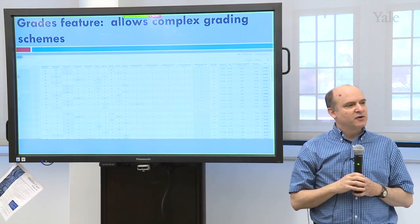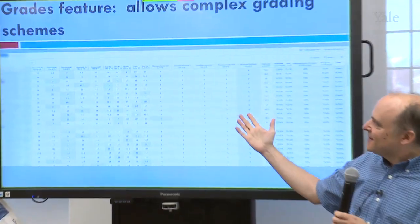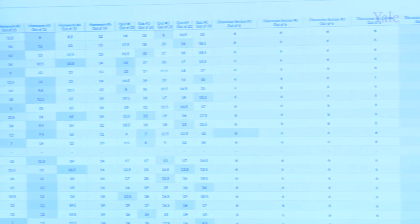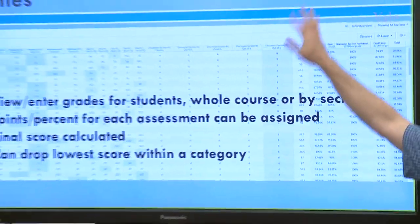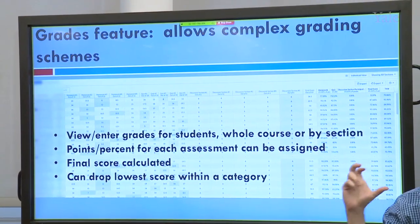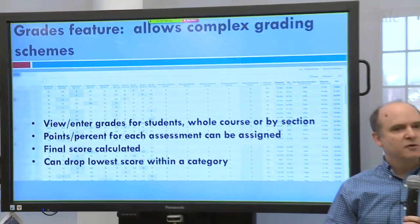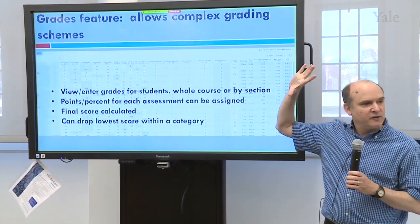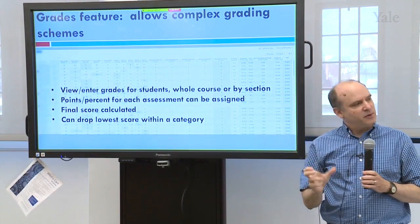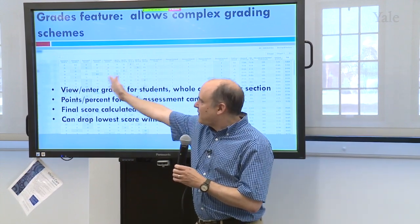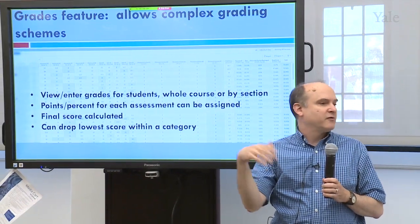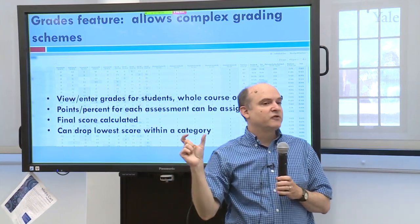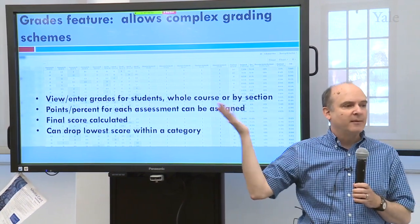Those scores automatically go into the grades function, which creates a large spreadsheet. Every row is a student, every column is an assignment, and there's a final score at the end. A teaching fellow could just pull up records for the students in their section. When we set this up at the beginning of the semester, we assigned a point value or percentage value for every assignment, and the system can automatically calculate a final score. We use a complex grading scheme — there are five homework assignments and students are allowed to drop their lowest scored one. For every student, one of the scores is grayed out — that's the one Canvas automatically determined was the lowest and dropped from the final calculation.